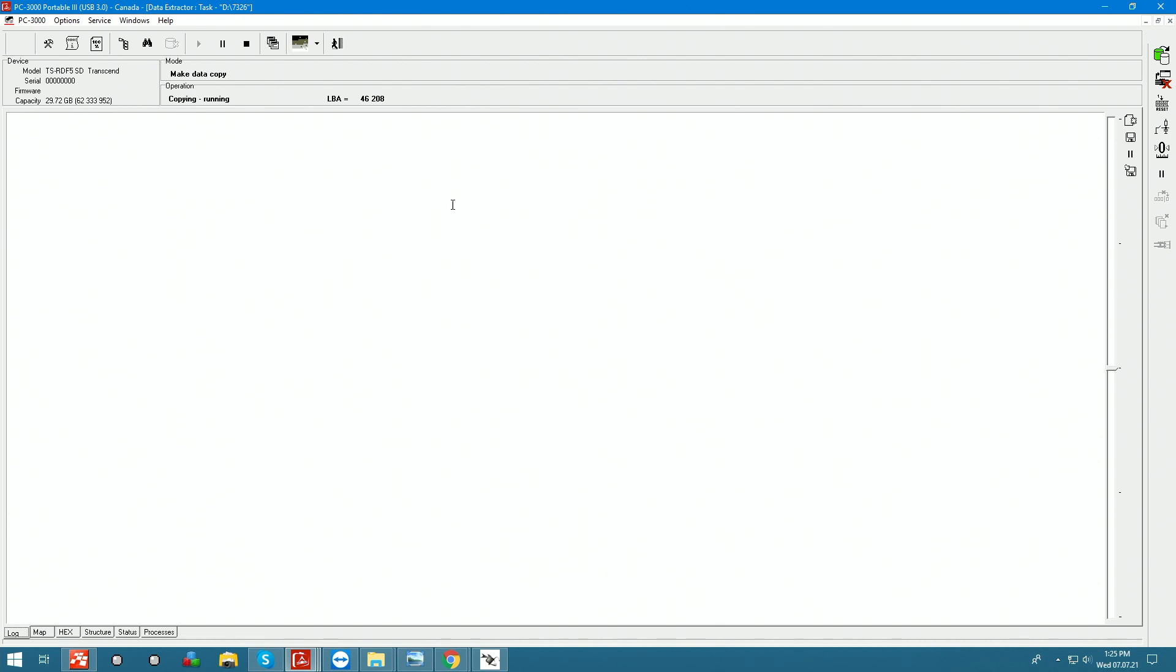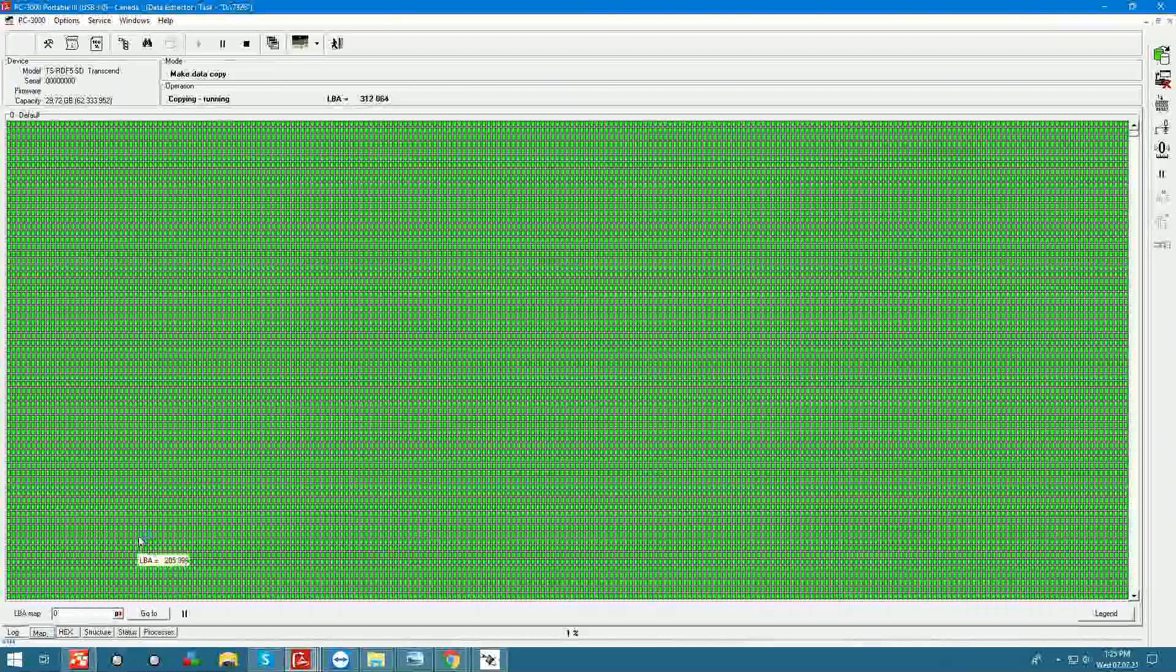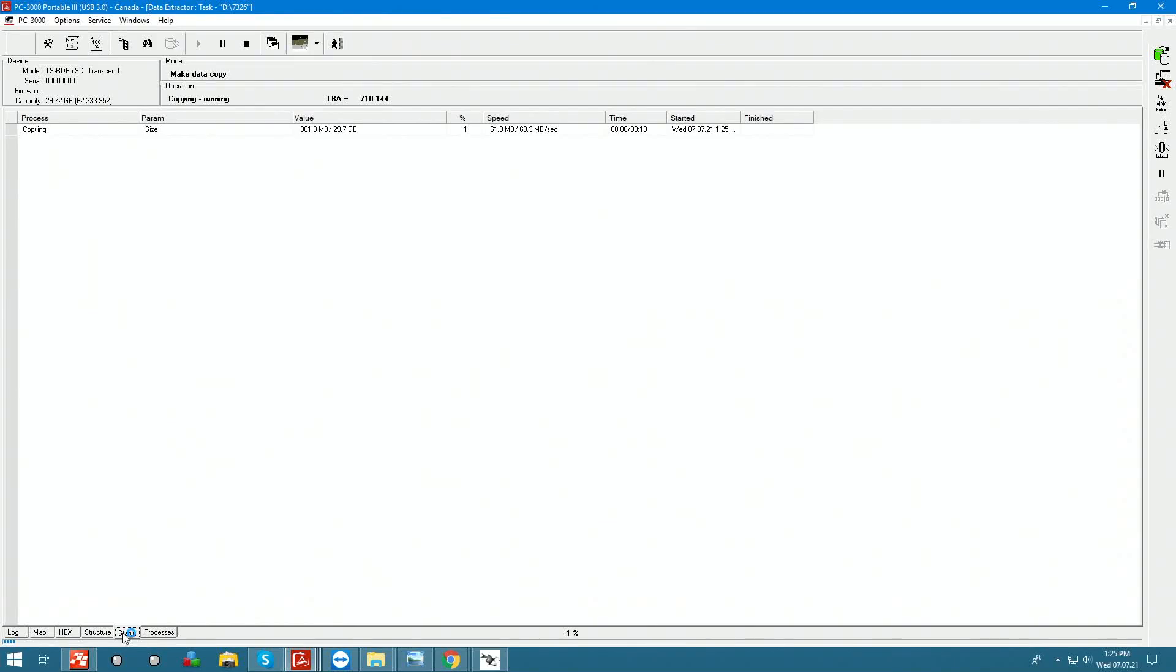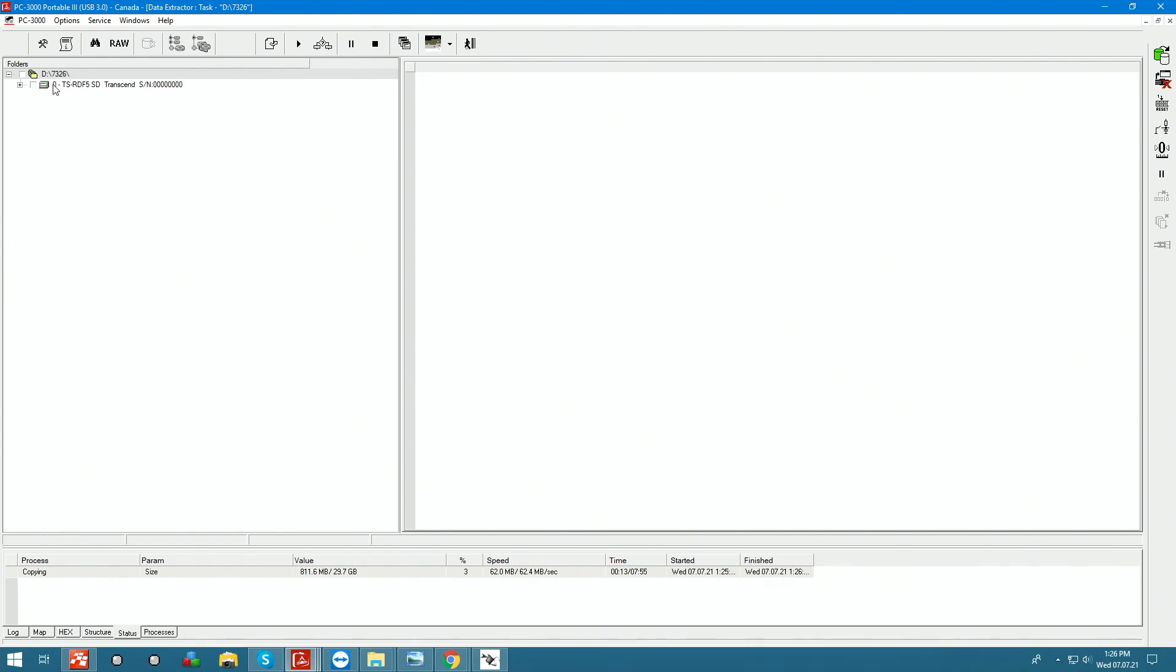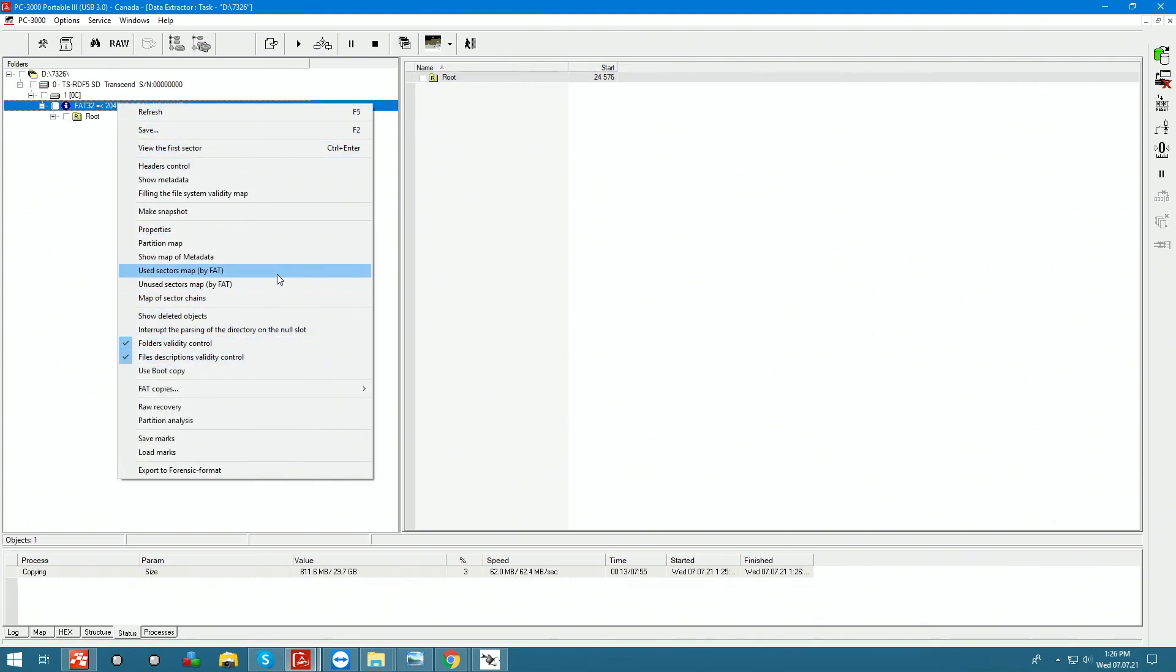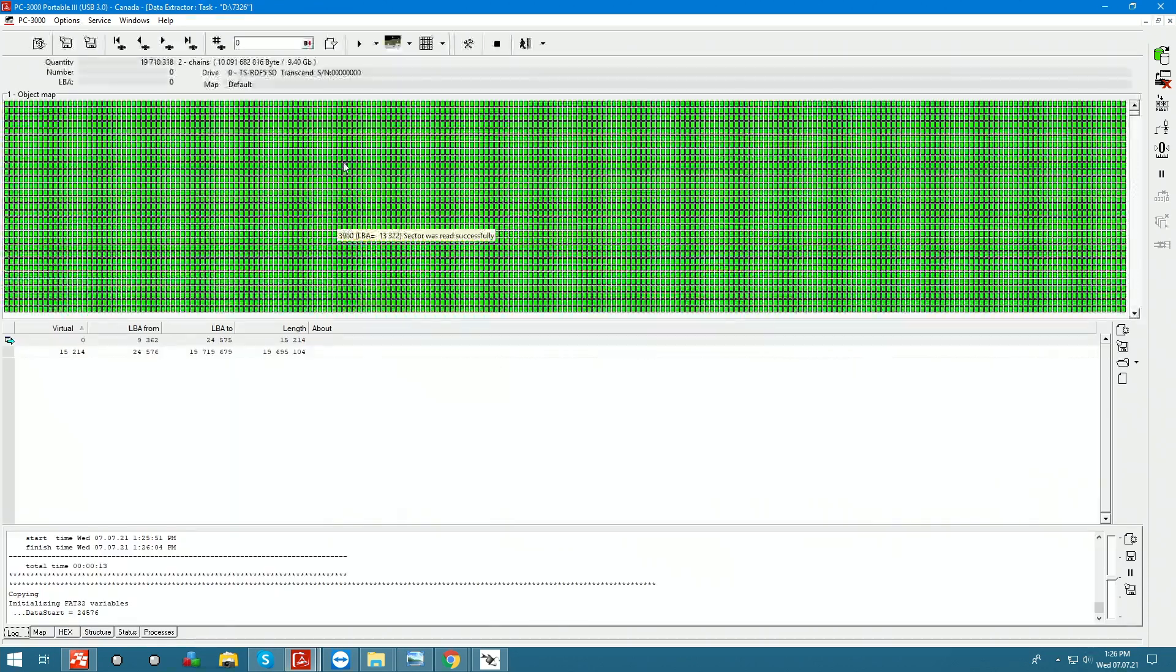We can execute the imaging and we can see that the imaging is running great. The speed, 60 megabytes per second, that's pretty good. Let's stop this and we can go into the explorer. We can see that this card has FAT32 partition. It has no name to it, but we can actually carve the data out by used sectors map. So we're going to go and do that. Used sector map is going to be calculated. This card was 9.4 gigabytes full.